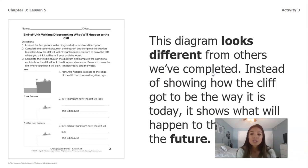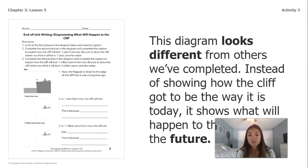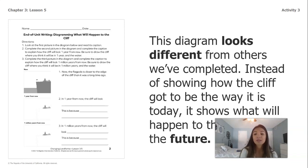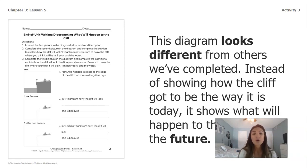This diagram looks different from the others we've completed. Instead of showing how the cliff got to be the way it is today, it shows what the cliff will look like in the future. We're not totally sure what it's going to look like — we're making a guess, but we're using information we've learned so far to help us make a more educated guess.